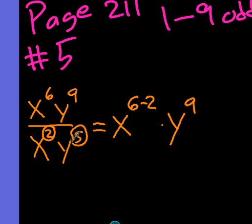So down below I'm going to have x to the sixth minus two is four, and y to the nine minus five, that is also four.